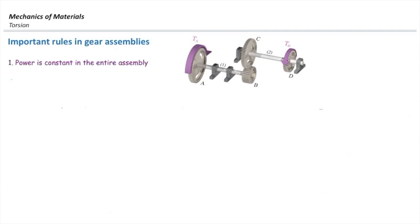The very first one says the power in a system is constant. We assume the system is frictionless. There is not any power loss in the system. Once we input the power from one end of the system, we get the same power at the other end.